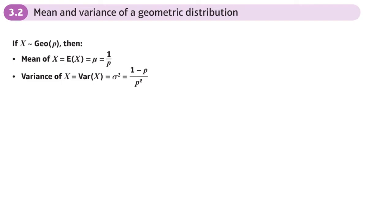Okay, section 3.2: mean and variance of a geometric distribution. Before we go into this, this might be a good point for you to recap and revise how to find the mean and variance of a binomial distribution.